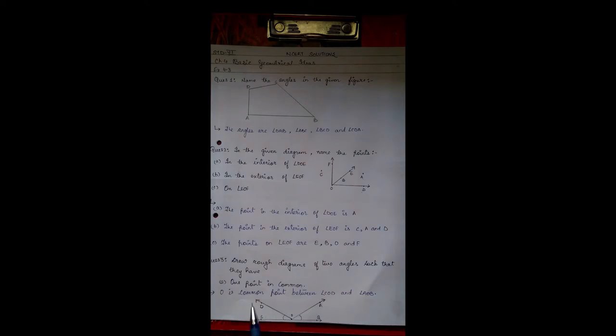Question 3: Draw rough diagrams for two angles such that they have one point in common. So we have drawn a diagram with one point, that is O, as the common point, and angles are formed COD and AOB.